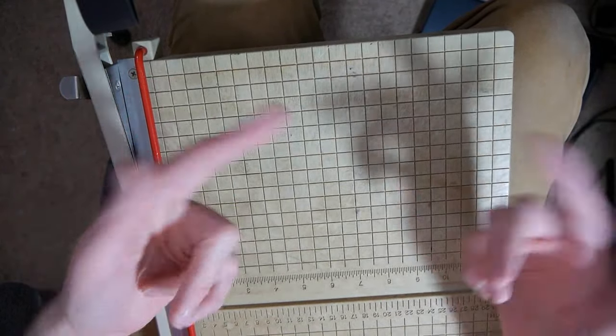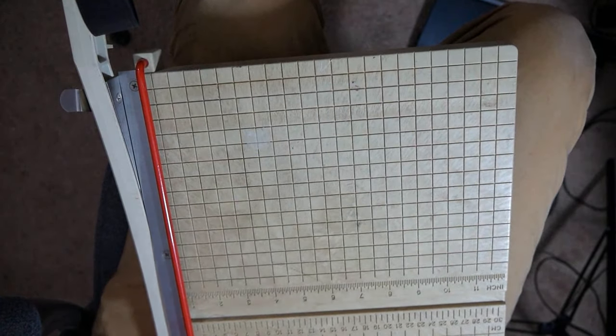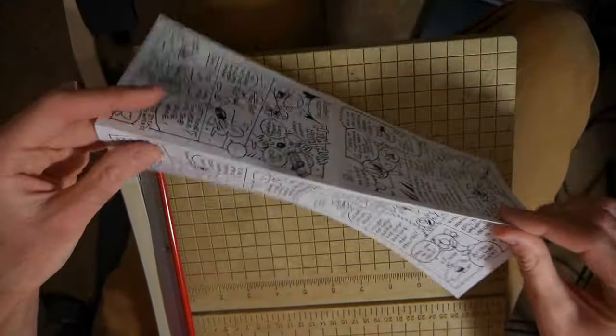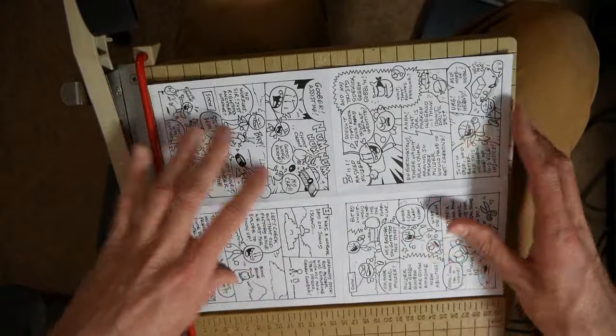And then just take that to a printer and get those printed. So once you get your copies of your master copy back, this is just original. I don't have a printer right now. But it would look just like this, of course.